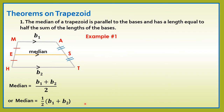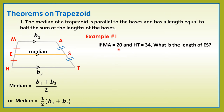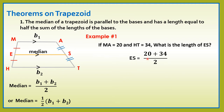Let us consider this example. If MA is equal to 20 and HT is equal to 34, what is the length of ES? So, ang ES natin dyan, that is the median. Gamitin natin ang formula. Ang B1 natin ay 20, that is MA. Ang B2 natin ay 34, that is HT. By substitution, ES is equal to 20 plus 34 all over 2. 20 plus 34 is 54, divided by 2. Therefore, ang ES natin ay 27.